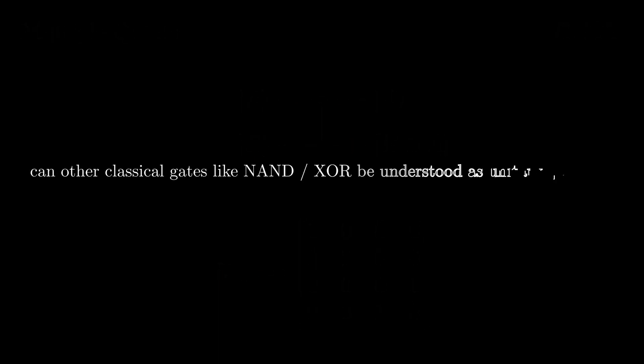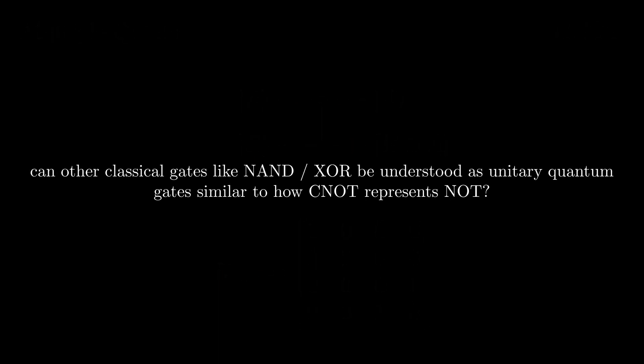But now you're probably wondering if other classical gates, like NAND or XOR, can be represented as a unitary gate, similar to how NOT represents CNOT. Turns out that this isn't actually possible. A cool property of unitary matrices is that their inverse is always also unitary. This means that all quantum gates are reversible, and that if you know the output of a gate, you can also know which inputs it came from. However, gates like NAND or XOR only flow in one direction.